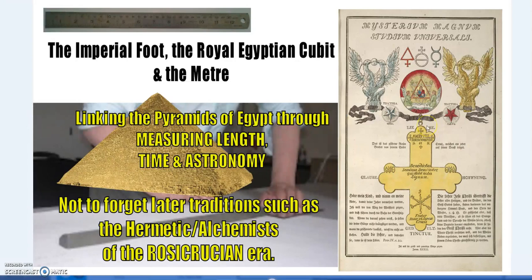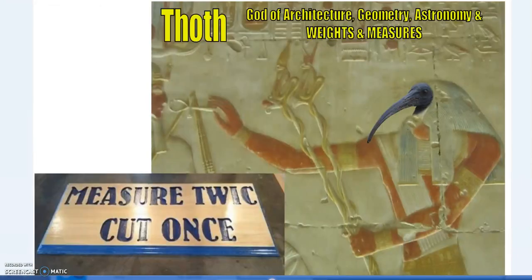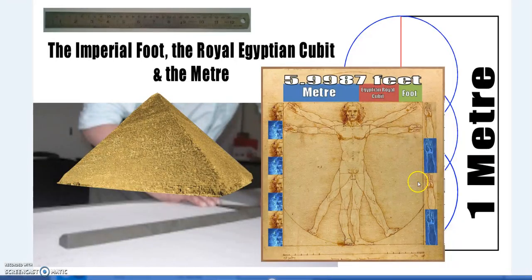Traditions have been passed on through time — for instance in Rosicrucian texts. The basis of this channel's theory is the concept of architecture, geometry, astronomy, and weights and measures. Thoth was the god of weights and measures; his female counterpart Seshat was the goddess of scribes, accountants, geometry, surveying, and astronomy. This also coincides with Nüwa and Fuxi in China, Ningishzida in Sumer, Hermes Trismegistus, and Hermes or Mercury in the Greco-Roman traditions.